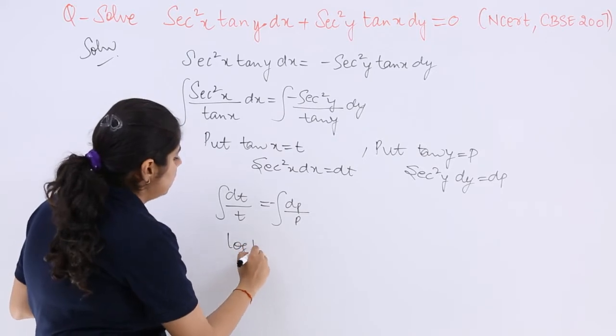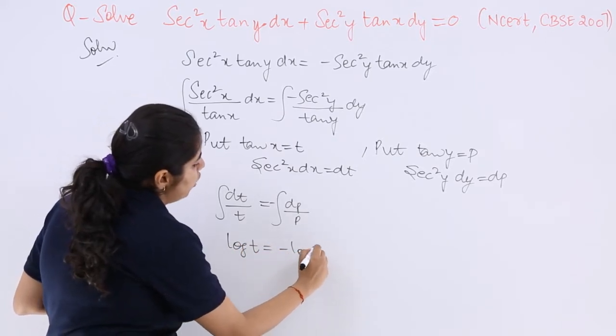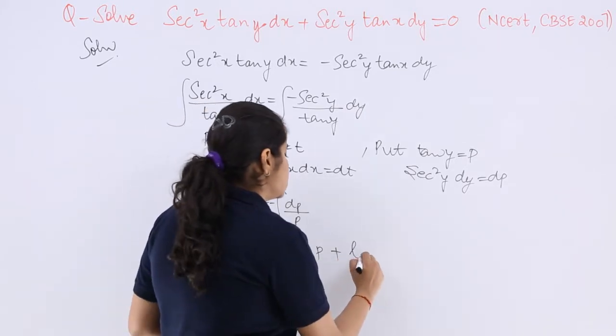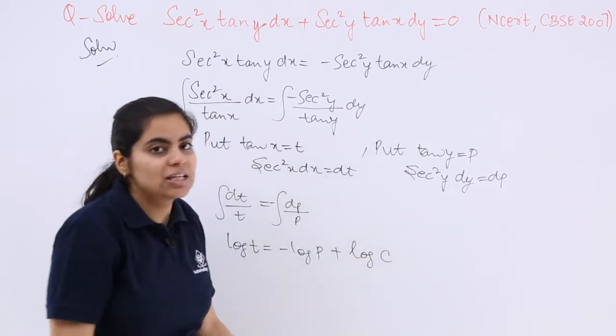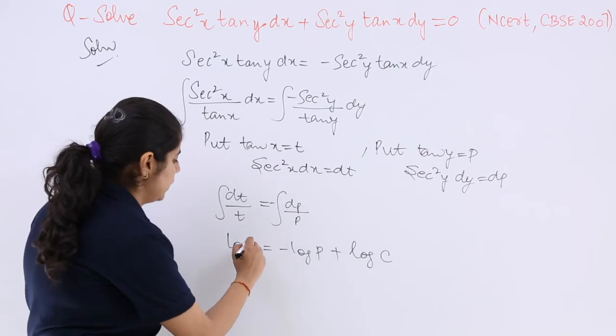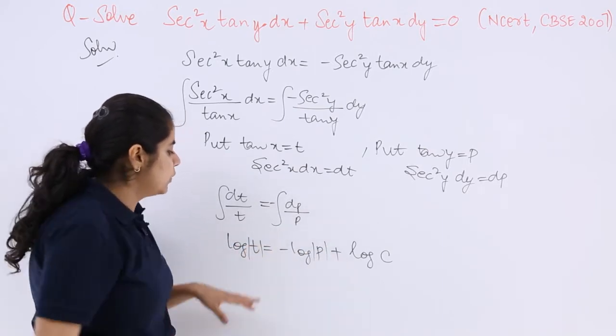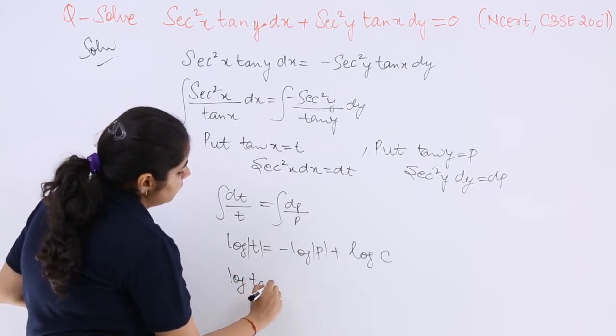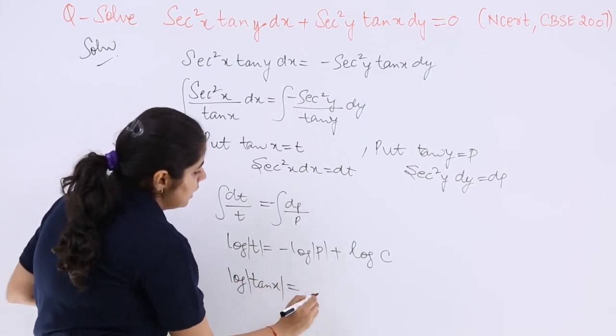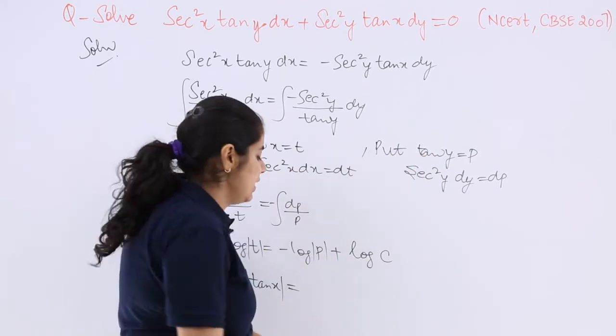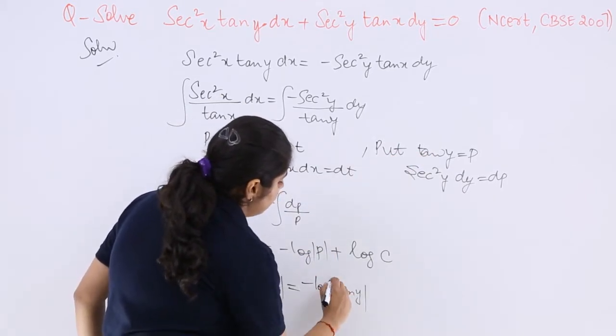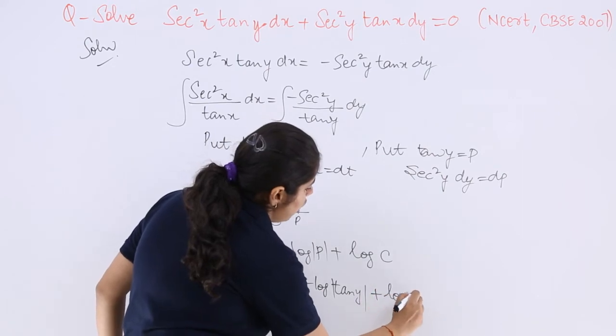So log t = -log p plus... Since we have to introduce a constant of integration, everything is in logarithmic, better we introduce in log only. So now we can put the values of t and p. So t is tan x, so it is log tan x. p is tan y, so it is -log tan y + log c.